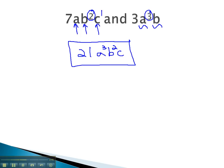21 a cubed b squared c is the least common multiple or denominator of 7 a b squared c and 3 a cubed b.